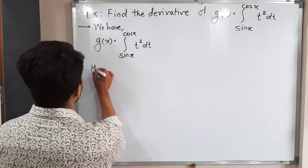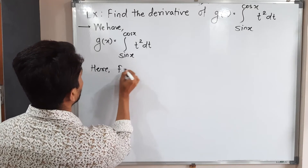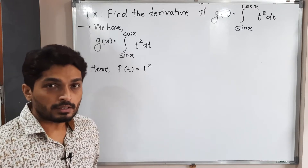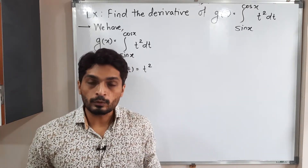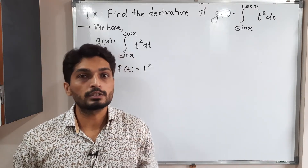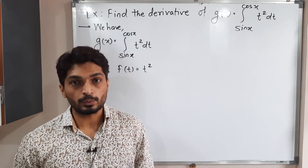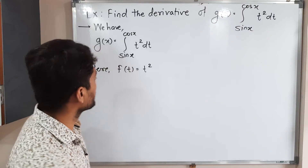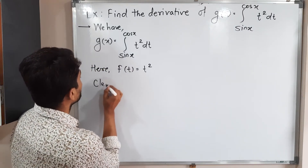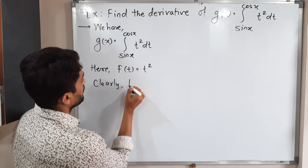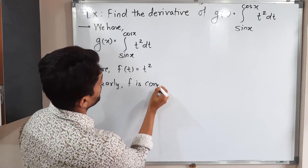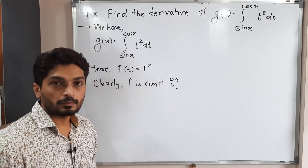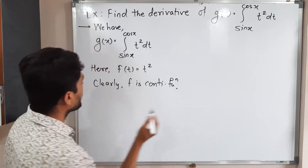So here f of t is equal to t squared. If this function is continuous, then only the First Fundamental Theorem of Calculus is applicable. t squared is a polynomial function, so it is clearly continuous. So clearly f is a continuous function, and that is why we can apply the theorem.